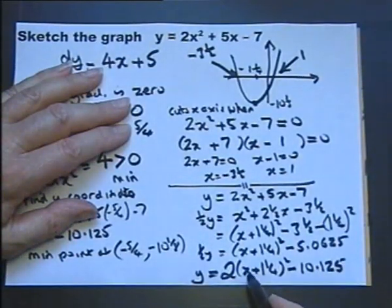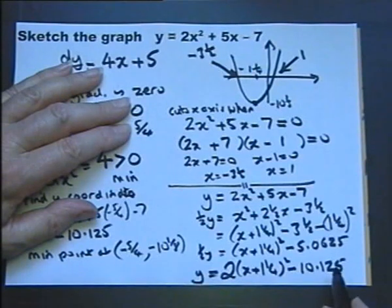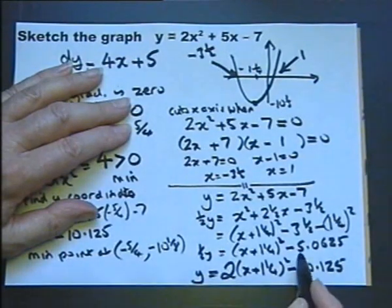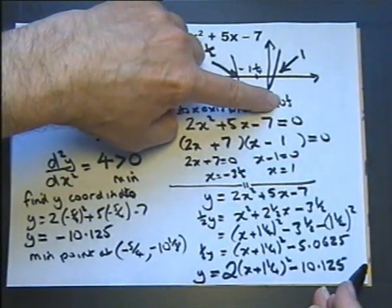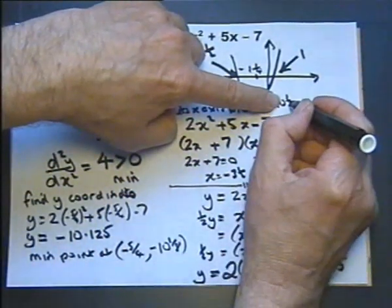And if you remember, this tells you how the graph of y equals x squared is transformed. It's transformed down the page, that amount, which in fact tallies with that.